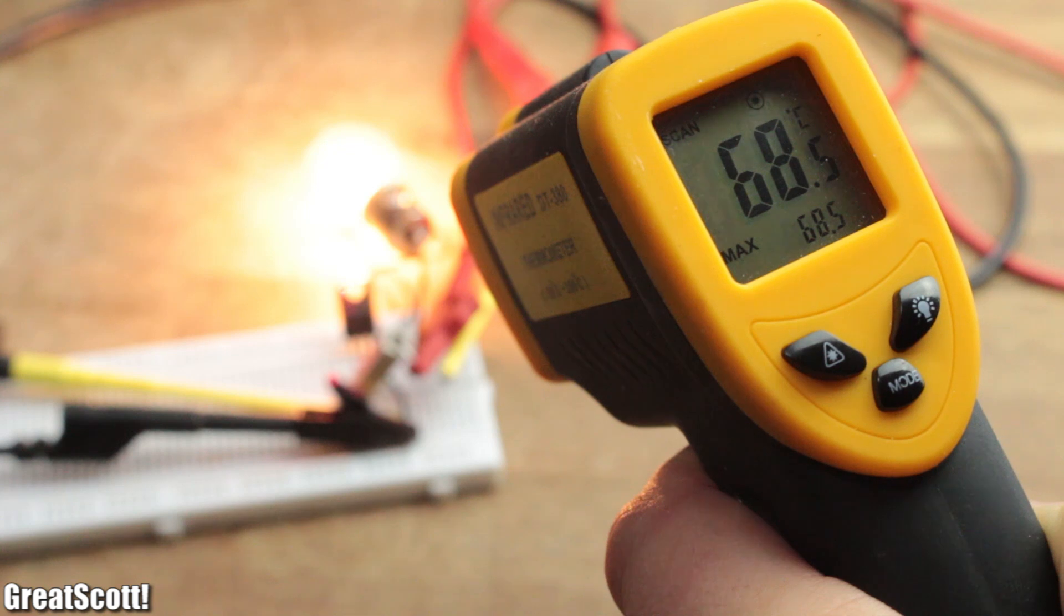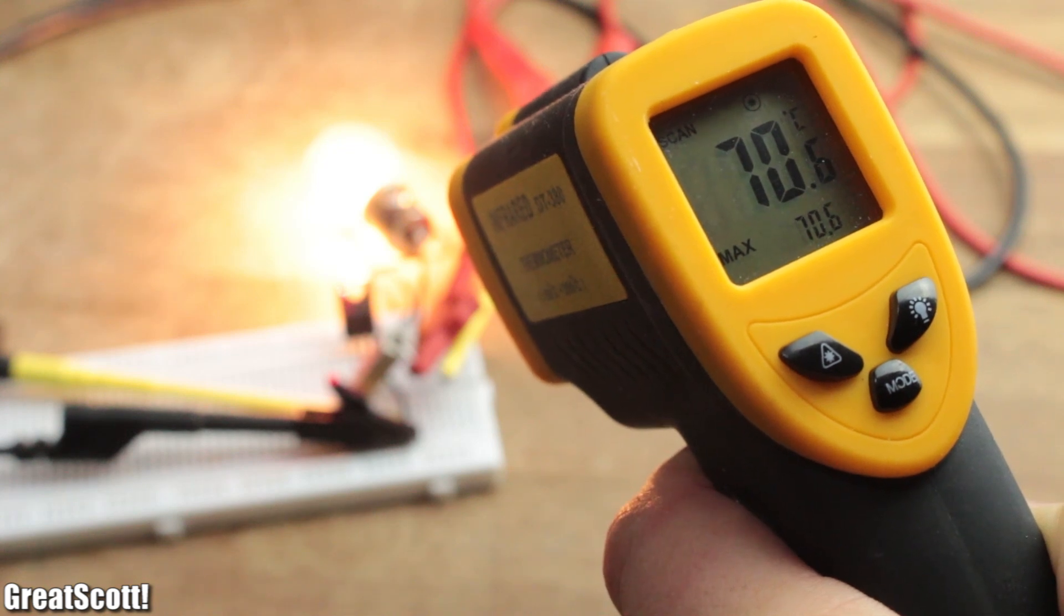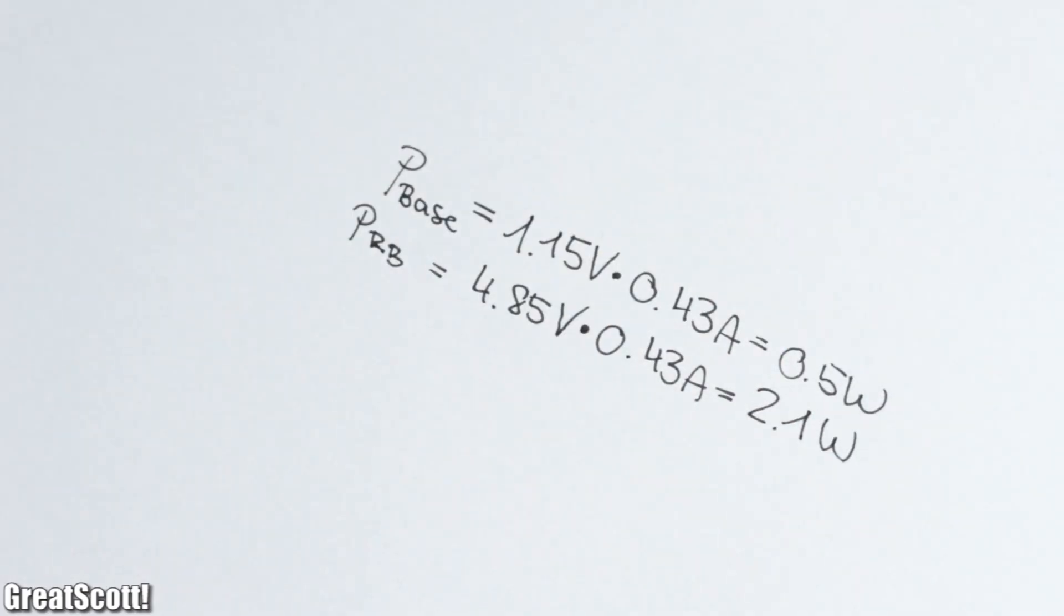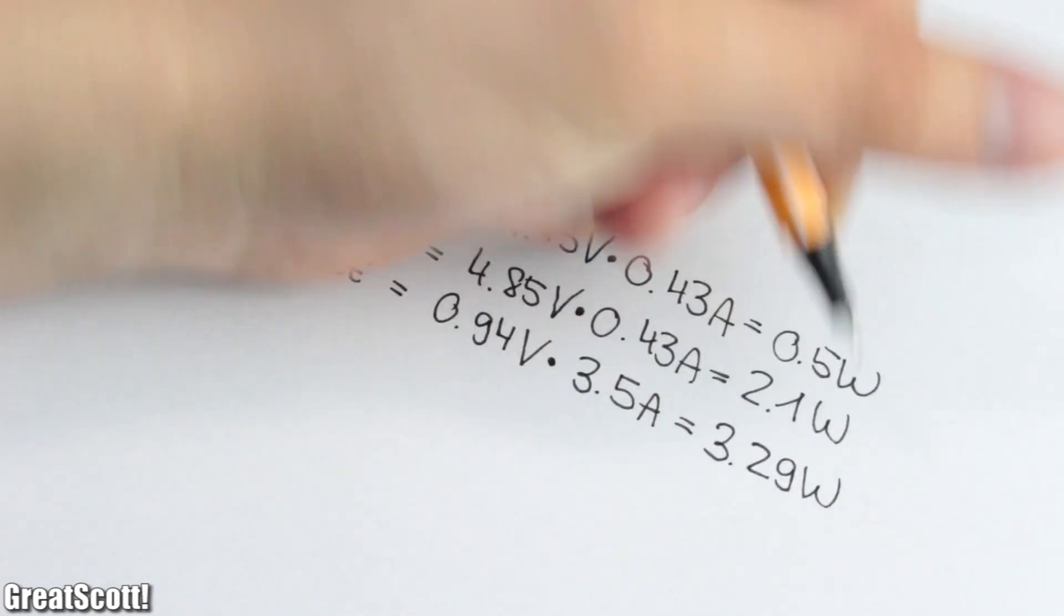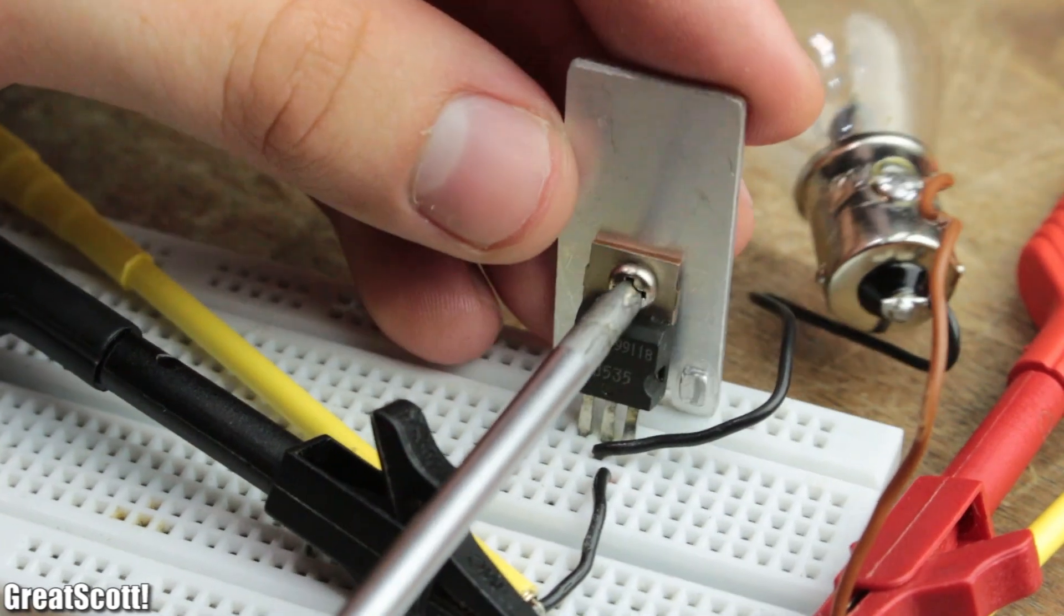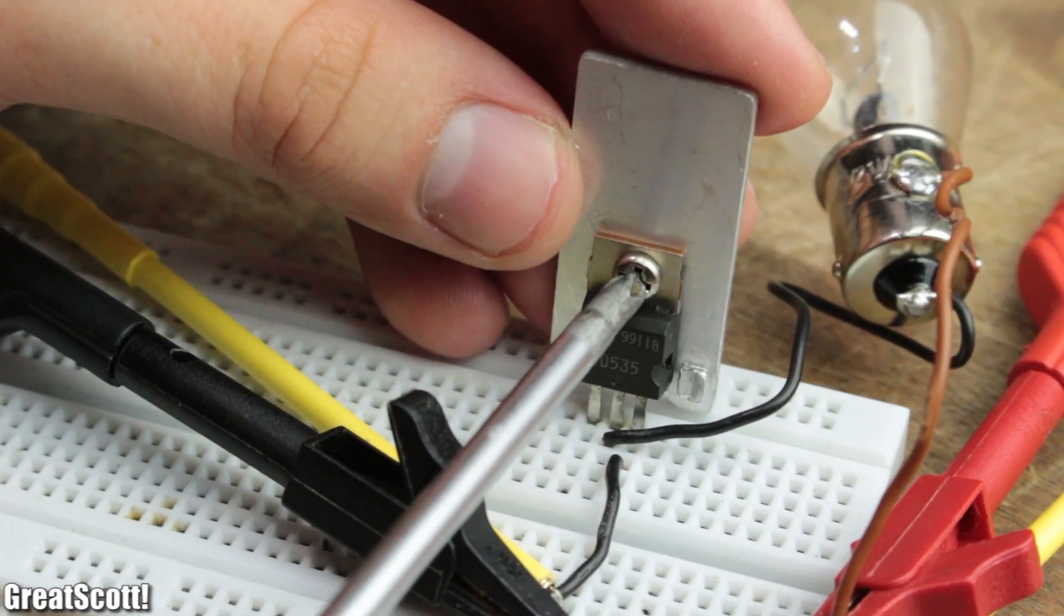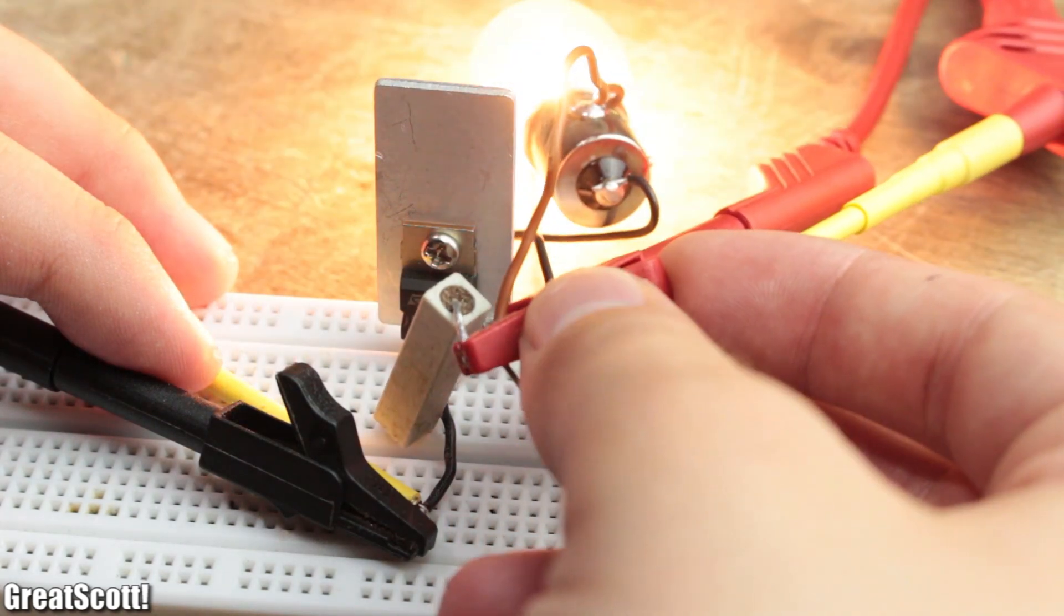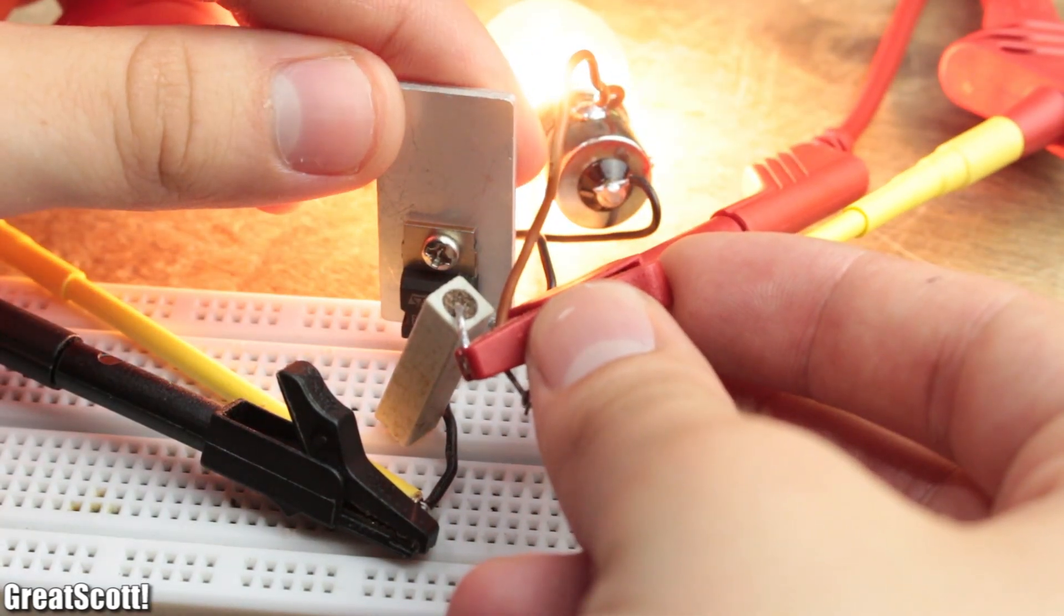The transistor easily reached a temperature of around 70 degrees Celsius after only a couple of seconds. The reason is the power loss through the base current and the current through the collector-emitter path, which is combined around 6 watts, and that is actually the biggest disadvantage of BJTs as high-current switches: the power loss and thus the lower efficiency of the circuit.